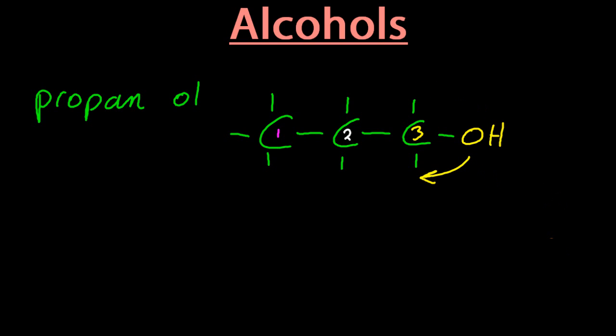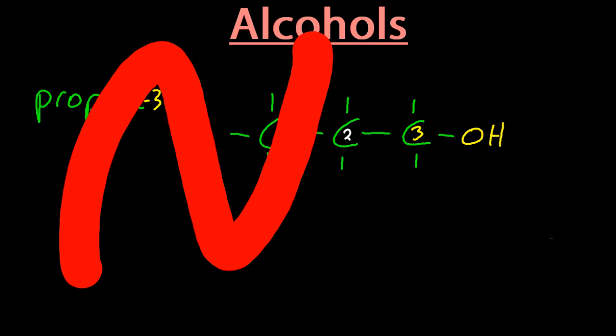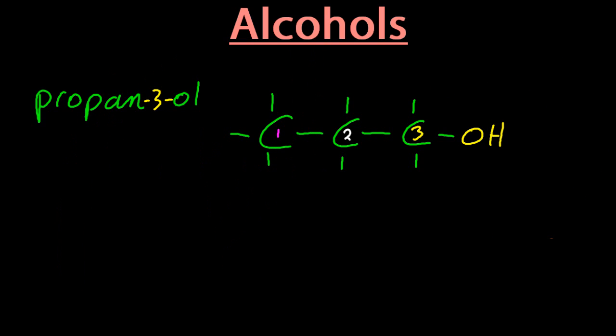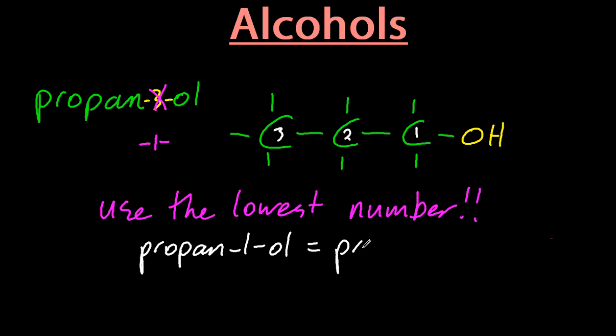And then propan-3-ol is on the third carbon. Oh dear, that's wrong. Propan-3-ol is wrong. You have to count giving the lowest number. So instead of going 1, 2, 3, really I should have numbered the other way round. Use the lowest number. So counting the other way round. That's propan-1-ol. Don't forget to put dashes between the numbers and the words.